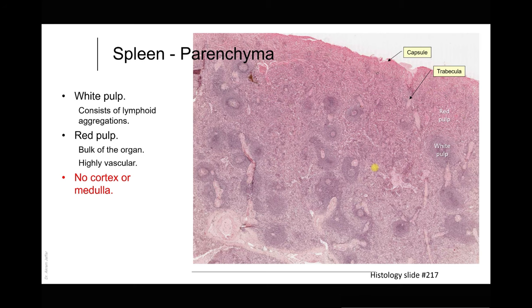Another example of GALT is in the appendix. A section of the appendix shows the mucosa, submucosa, and muscularis layer, with a lymphoid nodule — even with a germinal center — visible in the submucosa. This is large intestine because crypts but no villi are present. There is no connective tissue capsule surrounding the lymphoid aggregates.